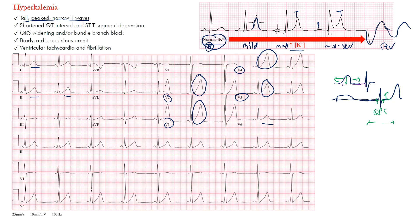Other things to note: you could see a shortening of the QT interval, possible ST segment depression, and a bundle branch block resulting from elevated potassium. Electrolyte levels out of control can affect the refractory period of the conduction system, leading to QRS widening. You may also see bradycardia, sinus arrest, and in severe cases, ventricular tachycardia, fibrillation, or the sine wave pattern.